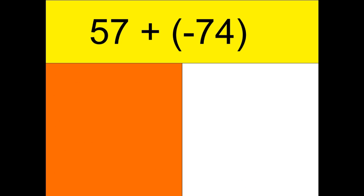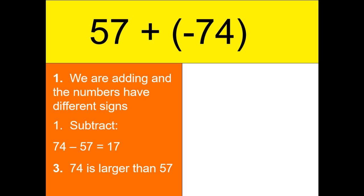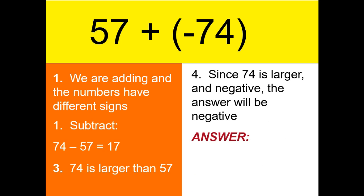We have 57 plus negative 74. Still different signs, so we will subtract them: 74 minus 57, which gives us 17. However, 74 is negative. So therefore, our final answer is negative 17.